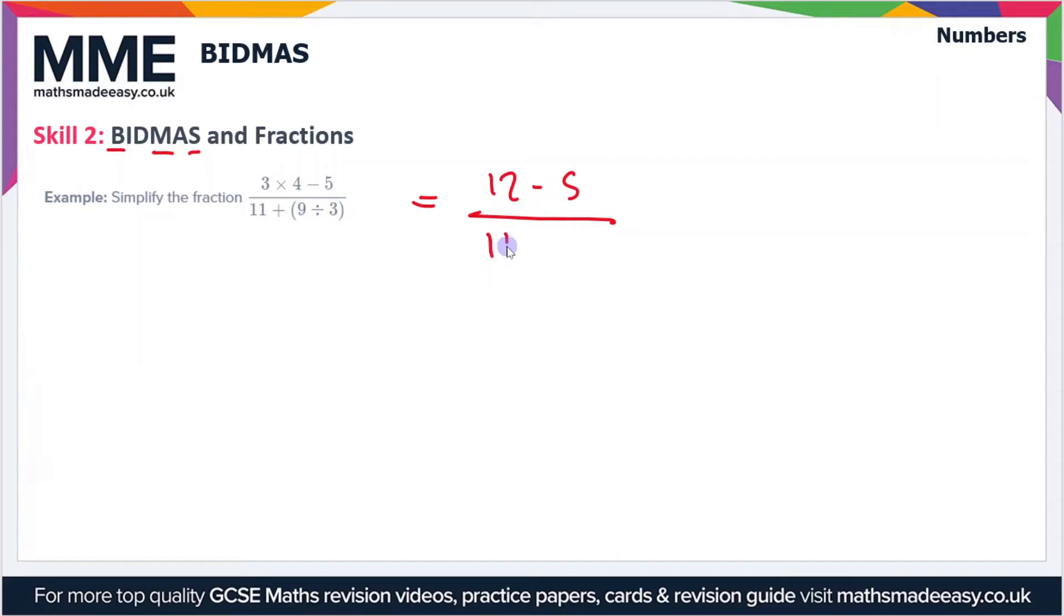Now let's simplify this fraction. We've got 12 - 5 which is 7, over 11 + 3 which is 14. So this is 7 over 14, which we can simplify to one-half.